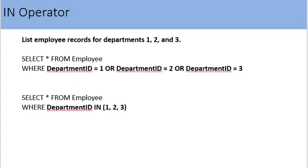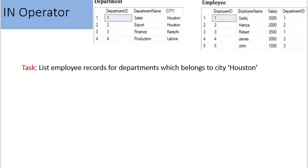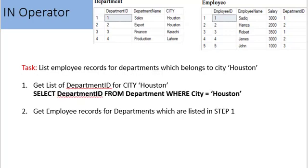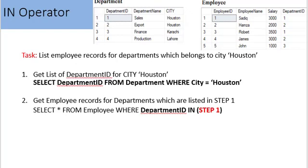Here is a new task: get employee records for departments in the city of Houston. We split this into two steps — first, get the list of department IDs for Houston: SELECT department_id FROM department WHERE city = 'Houston'. Second, get employee records for those departments: SELECT * FROM employee WHERE department_id IN (step 1). In SQL we cannot refer to other queries by name, so instead we move the first query directly inside the IN operator of the second query as a subquery — and here is the final combined query.